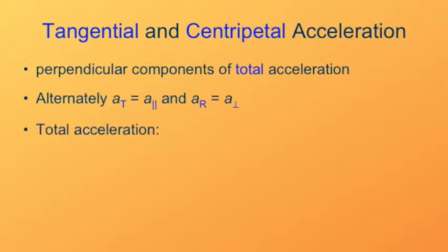The total acceleration of an object moving in a circular path is the combination of its tangential acceleration and its centripetal acceleration, but of course these two vectors are perpendicular to each other. So here we can specify that tangential acceleration is in the tangential direction — that's what this t-hat vector refers to.